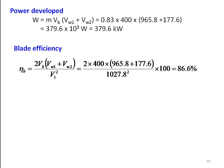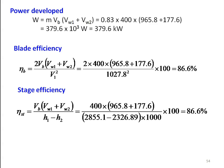Blade efficiency eta_B = 2 × Vb × (Vw1 + Vw2) / V1² = 2 × 400 × (965.8 + 177.6) / 1027.8² × 100 = 86.6%. Stage efficiency = Vb × (Vw1 + Vw2) / (H1 − H2) × 1000 × 100 = 400 × (965.8 + 177.6) / ((2855.1 − 2326.89) × 1000) × 100 = 85.6%. The stage efficiency and blade efficiency are approximately equal for the impulse turbine.